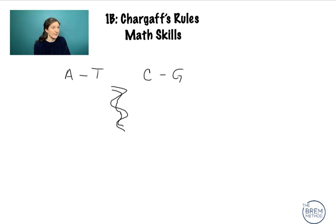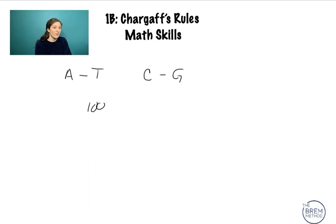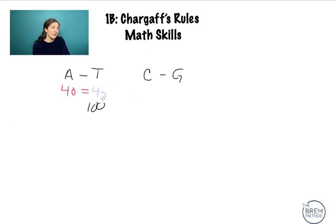Let's start with a very basic example. Let's say there are 100 nucleotides in an organism's genome, and 40 of them are adenine. By definition, because we are following Chargaff's rule, there also has to be 40 thymines. Since we only have 100, that means 80 of 100 are adenine and thymine base pairs together.